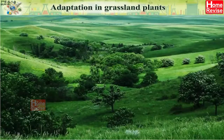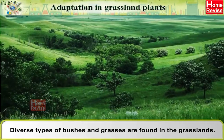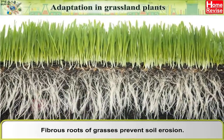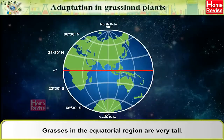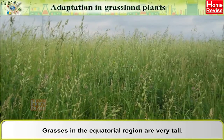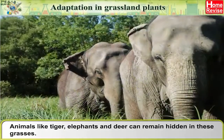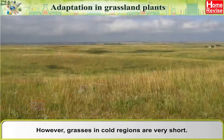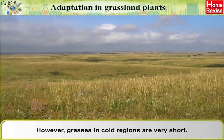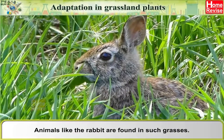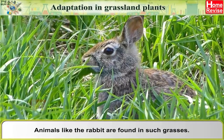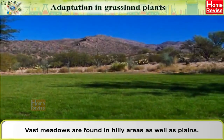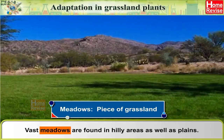Adaptation in Grassland Plants: Diverse types of bushes and grasses are found in grasslands. Fibrous roots of grasses prevent soil erosion. Grasses in the equatorial region are very tall — animals like tigers, elephants and deer can remain hidden in them. However, grasses in cold regions are very short, and animals like the rabbit are found there. Vast meadows (pieces of grassland) are found in hilly areas as well as plains.